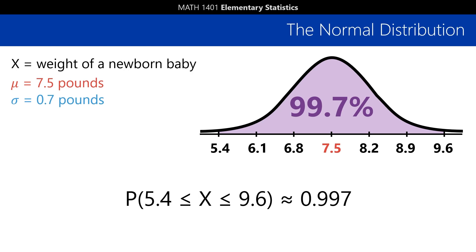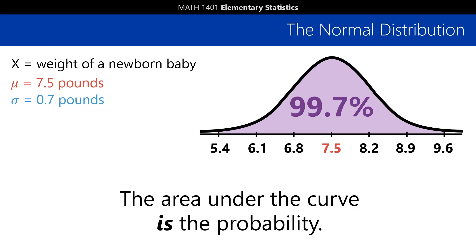By the way, this area we've been looking at in these diagrams isn't just a cute way to visualize these probabilities. Whenever you have a continuous random variable, like with the normal distribution, the area under the curve is the probability.